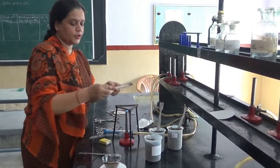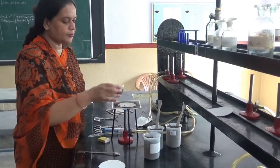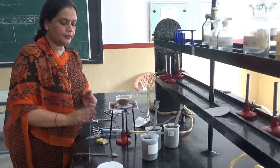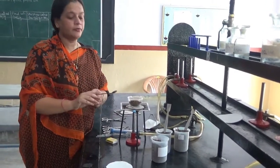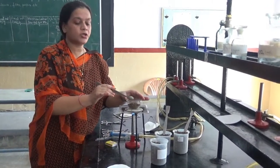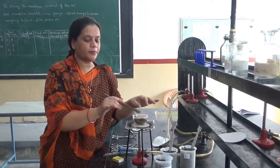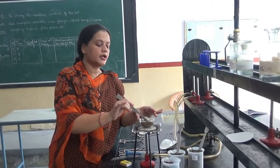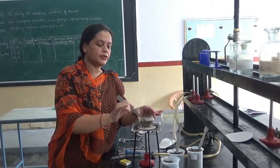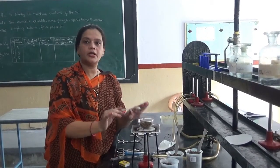And a wire gauze over it. Keep the crucible over it and start heating it. While heating you have to continuously stir the soil so that each and every part of the soil is dried up properly. Keep it heating for about 10 minutes.